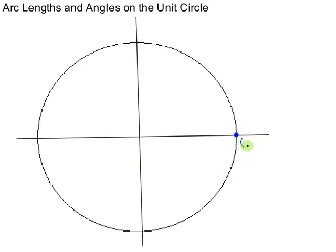In particular, this is the ordered pair (1, 0), right, because we know it's 1 away from the origin since the radius is 1. Okay, so the relationship between arc lengths and angles.